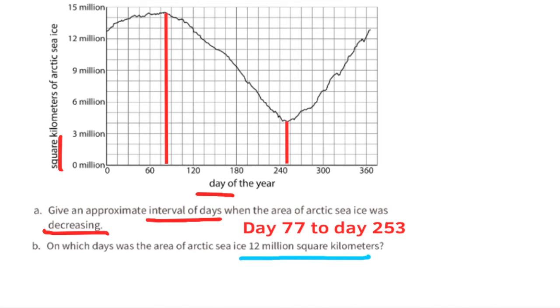Part B: On which days was the area of Arctic sea ice 12 million square kilometers? The graph shows that there were 3 times when the area of the Arctic sea ice was about 12 million square kilometers: approximately days 133, 350, and 359.